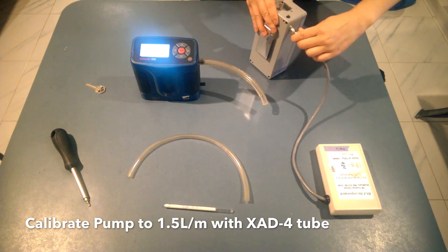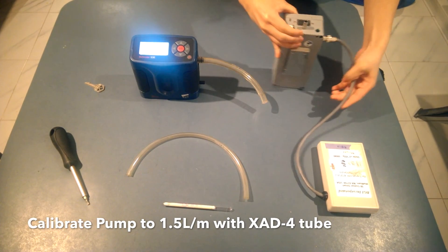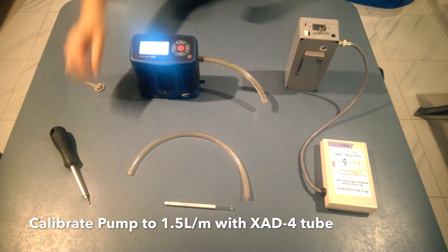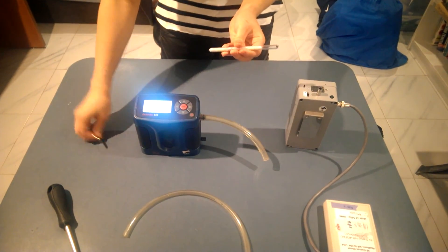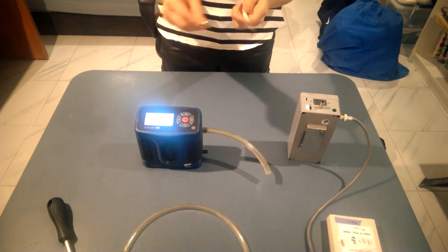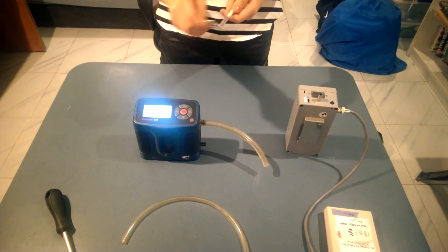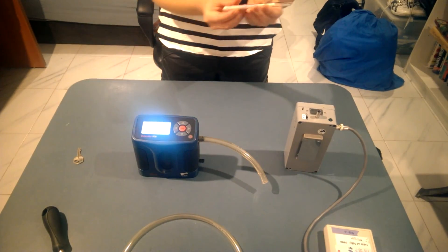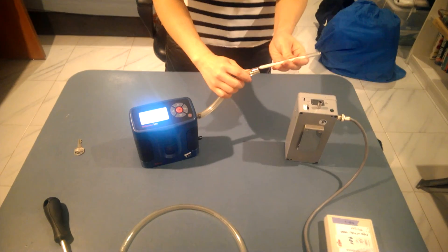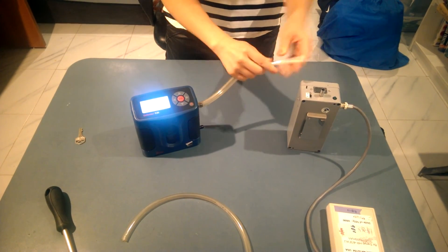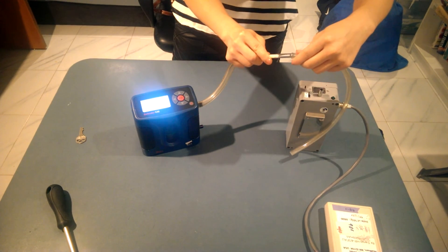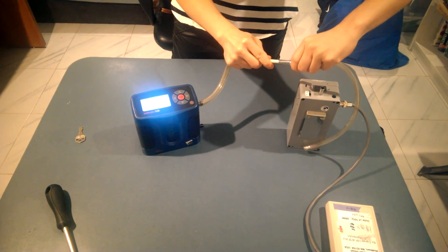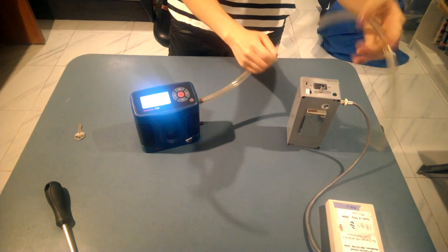To calibrate your pump, attach a fully charged battery pack to the side of your pump. Break both ends off of your XAD4 tube. Then insert the tube and attach it in series in between your calibrator and your pump, with the arrow pointing inwards towards the pump.